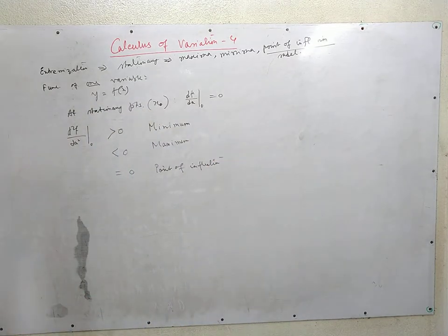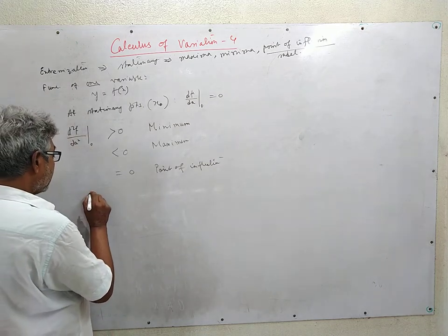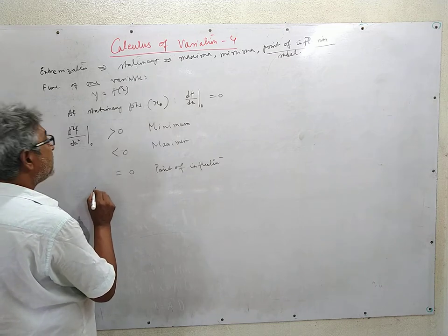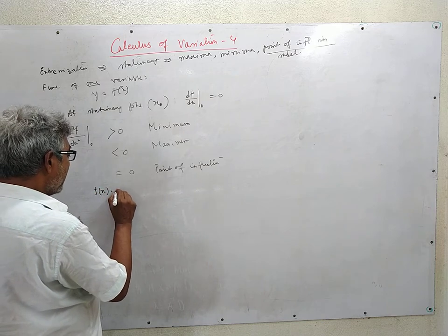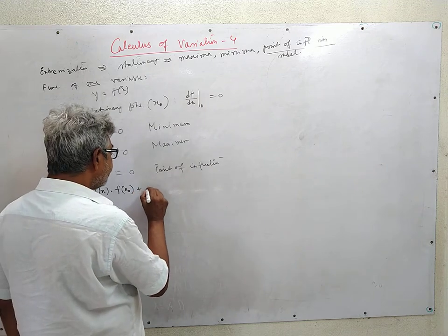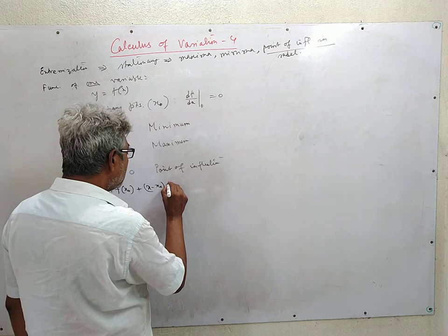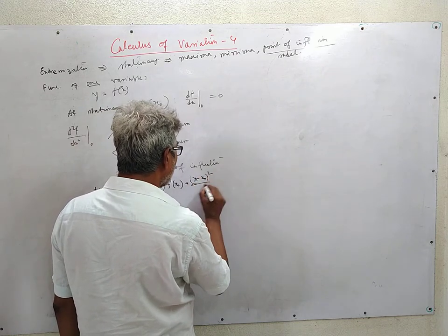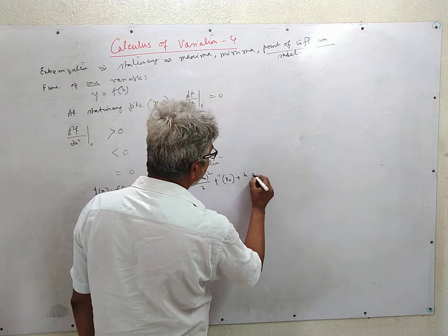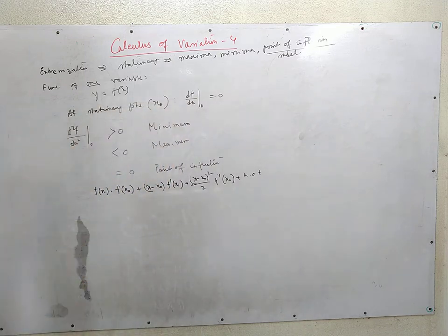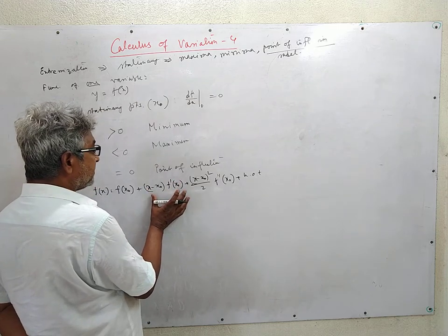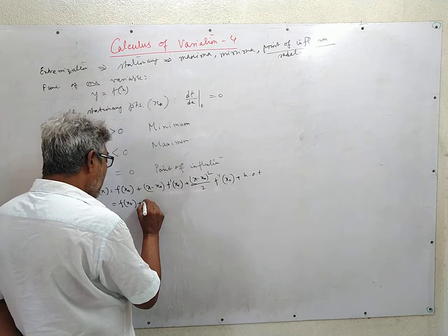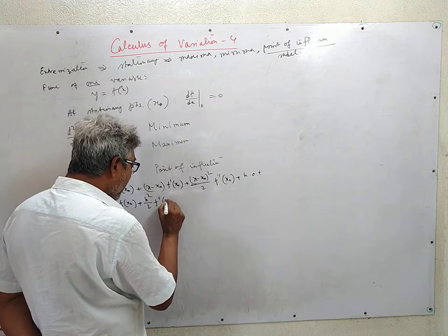Let me justify this convention. We expand the function f about x₀: f(x) = f(x₀) + (x - x₀)·f'(x₀) + (x - x₀)²/2 · f''(x₀) + higher order terms. We neglect higher order terms, and at the stationary point x₀ the first derivative term is zero, so this becomes f(x₀) + h²/2 · f''(x₀), where h = x - x₀.